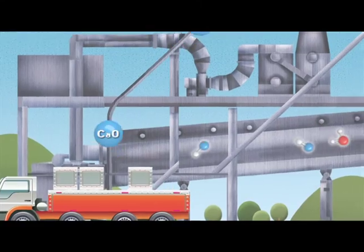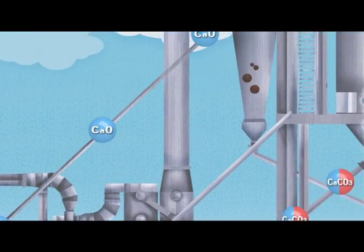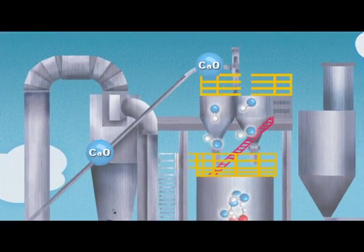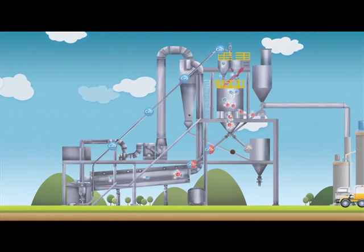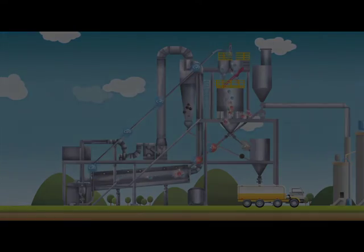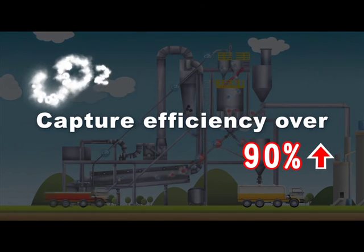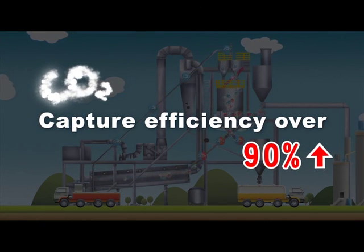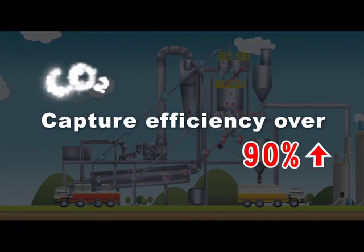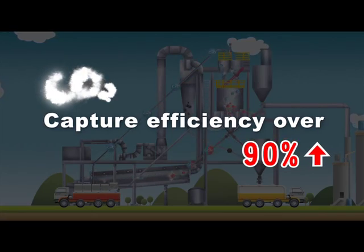Meanwhile, the calcium oxide is returned to the carbonator for the next cycle of reactions. Through this continuous cycle of reactions, more than 90% of the carbon dioxide emissions from the plant can be captured, reducing carbon dioxide emissions significantly.